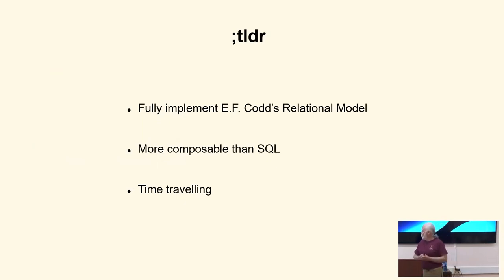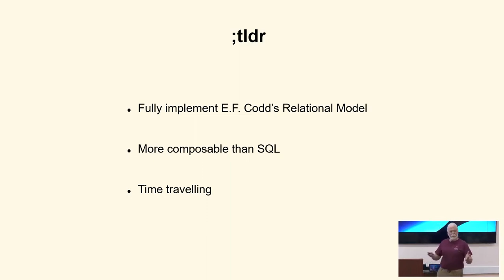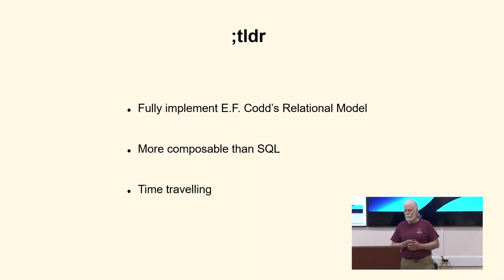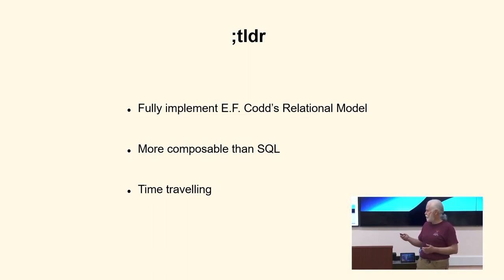The brief overview: we're going to fully implement EF-COD's model, unlike what SQL does, and if you know anything about SQL, you know it is deficient in several regards. We'll also make it more composable than SQL, which has problems with composability. And we're going to make it time-traveling — a time-traveling database means we're able to query the database at any particular time: its state, the schema, as well as the data.